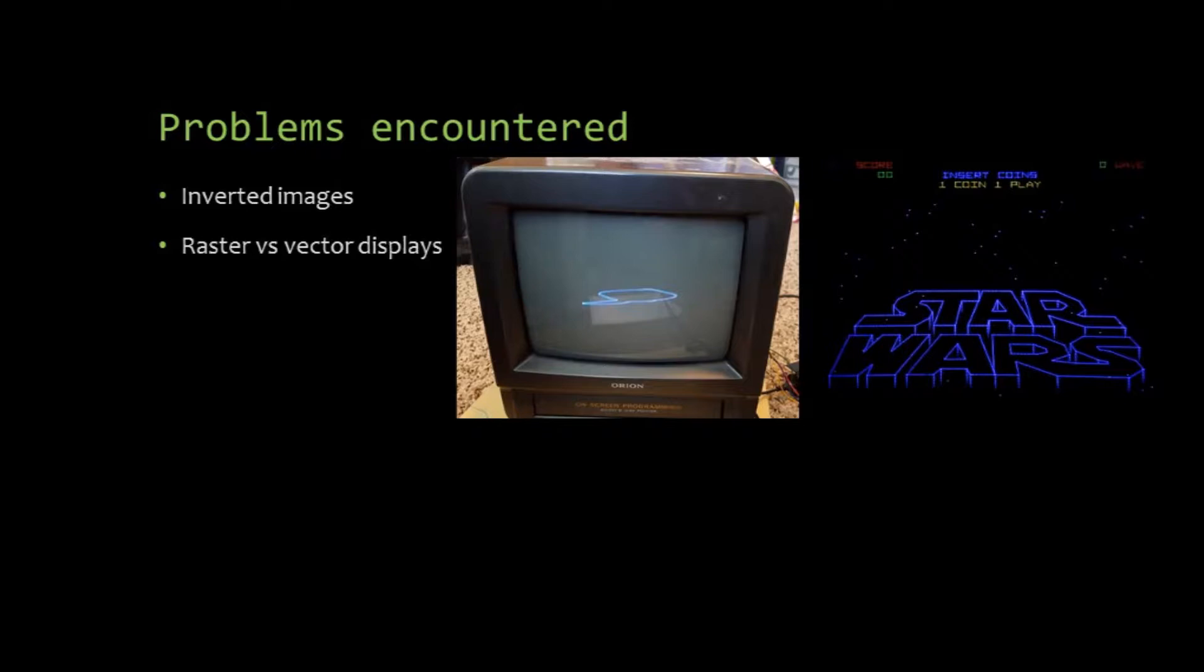After a lot of research, I found out that my problem was that I was trying to produce a vector image on a raster display. A raster display is a screen that scans horizontally very quickly and then vertically at a slower rate. A vector display uses lines to produce images. I found tutorials on how to convert a raster display to a vector display, but the process was dangerous and would take too long.